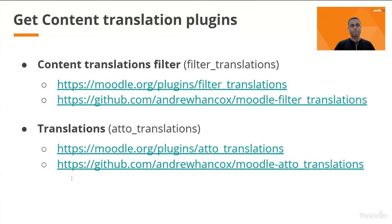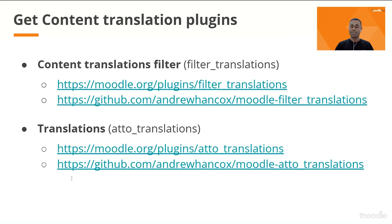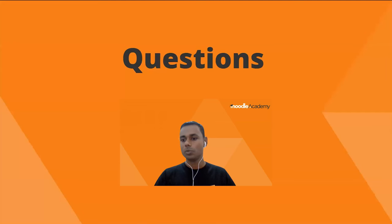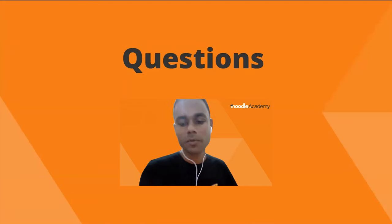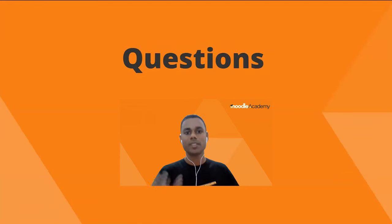Here are the links to the plugins: the content translations filter, available on the Moodle plugins database along with a link to the code repository, and the Atto translations plugin, also available on the Moodle plugins directory with a link to the GitHub repository as well. Let's move on to questions — if there are any, we can answer those.